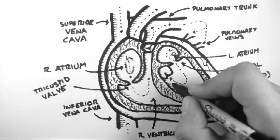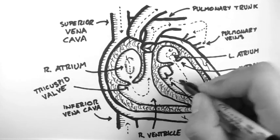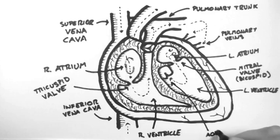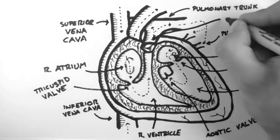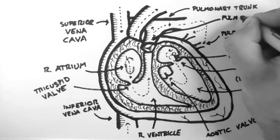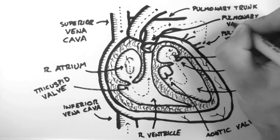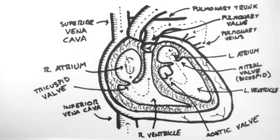The blood then flows out through the aortic valve, and out the aorta to the body. Now I'll just label some other things here. The pulmonary valve is this valve here, at the proximal end of the pulmonary trunk.